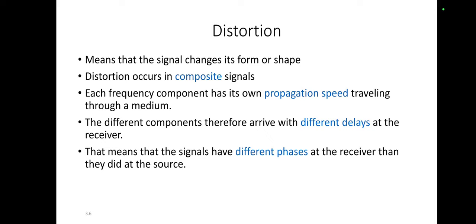Next is distortion. Distortion means the signal changes its form or shape. Distortion occurs due to the composite signal. A composite signal is the combination of two or more simple sine waves with different frequencies, phases, and amplitudes.